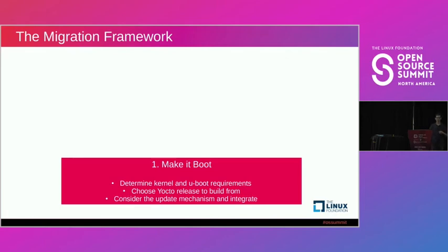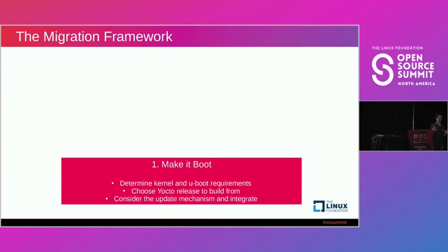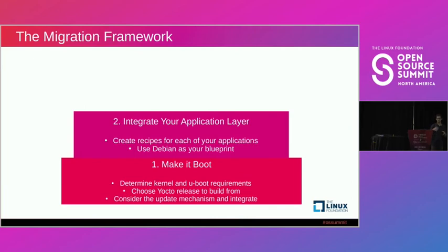When I approached this I wanted to rush to the end and get my applications building in the Yocto environment right away. The problem was I got one application building relatively easily, but then when I figured out my hardware requirements all of the cross-compilation settings changed. So you want a system that boots — know your hardware requirements so you can build your applications around that. Next, integrate your application layer: call upon support from your application developers, get their expertise on which system libraries you need, and utilize your current Debian build process as your blueprint.